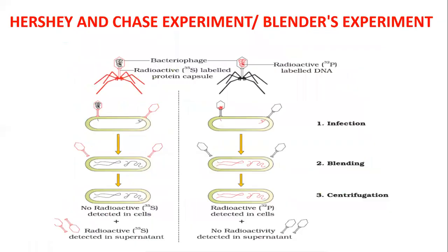Now let us revise the same topic with a diagrammatic representation of the Hershey and Chase experiment, also called the blending experiment. There are two sets of T2 bacteriophages — red color demarcates radioactive. In the first set, protein is made radioactive using sulfur-35, so only protein is radioactive and DNA is not. In the second set, DNA is made radioactive using phosphorus-32, so only DNA is radioactive and protein is not.